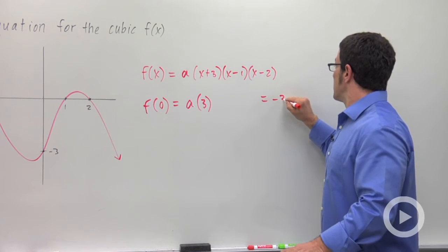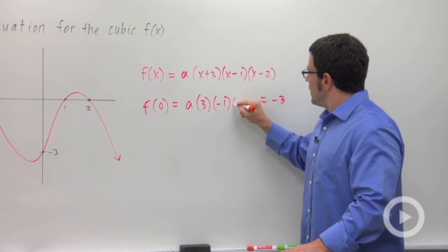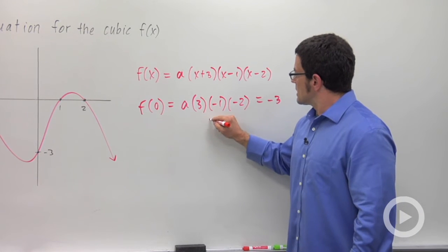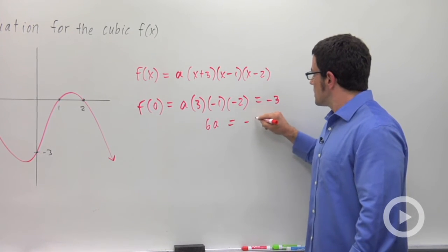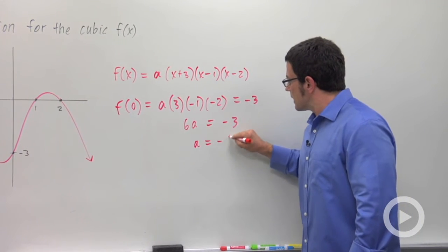That's what I got last time, negative 3. 3, negative 1, negative 2. And again, I get 6a equals negative 3. So a is negative 1 half.